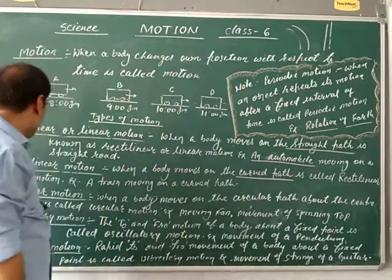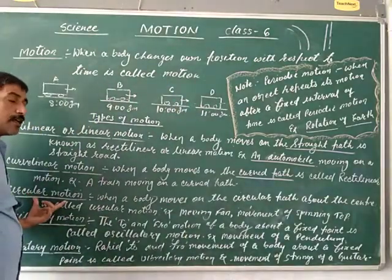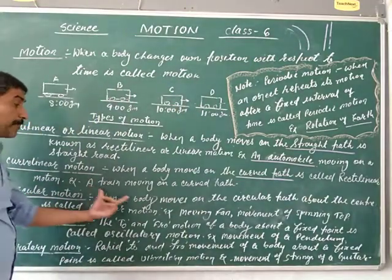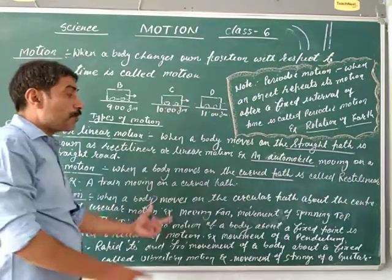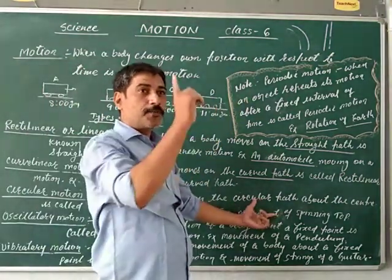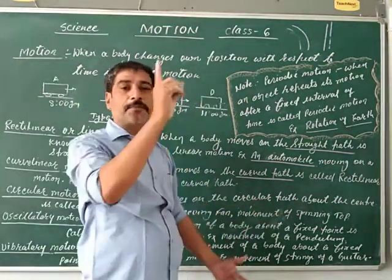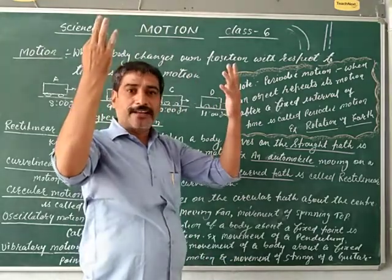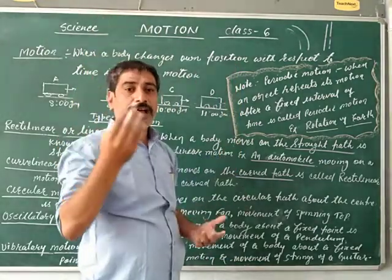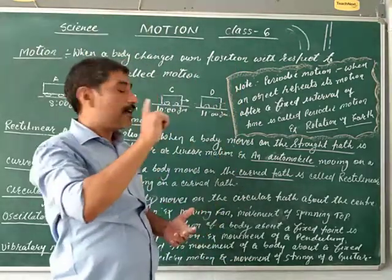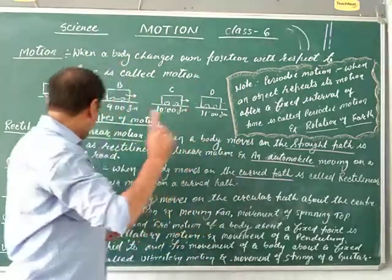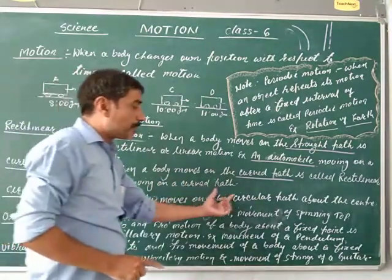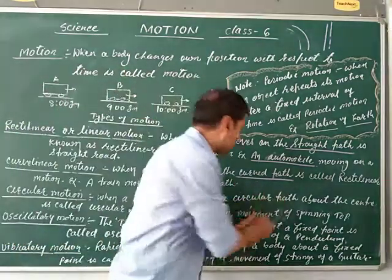Third, circular motion. When the body moves on a circular path, this type of movement is known as circular motion.